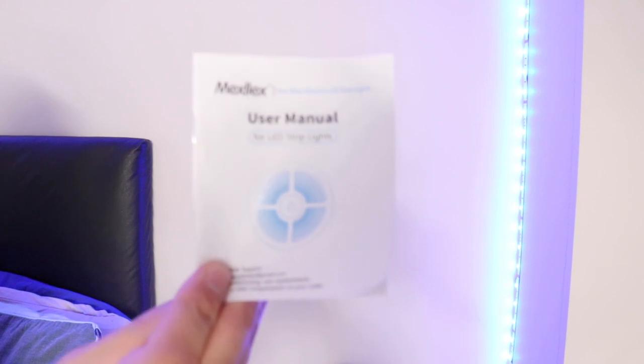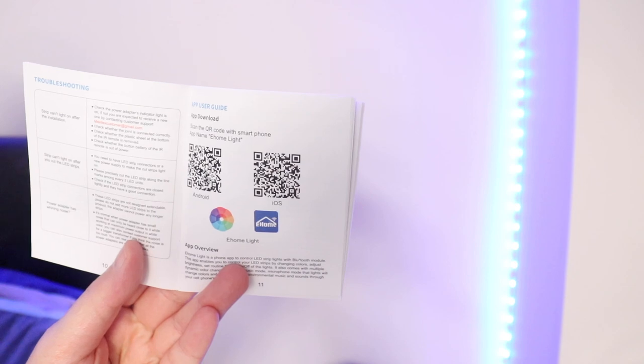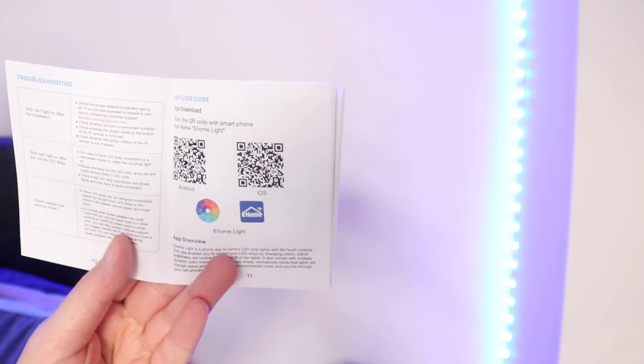Okay, so to download the app is pretty straightforward. Check your user manual. And you will see a QR code for iOS and Android. Just scan it with your mobile phone and it's ready to go.